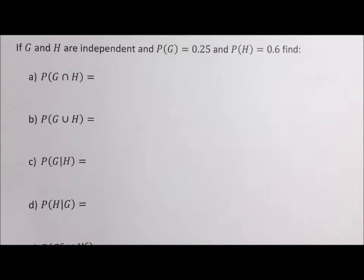Okay, if G and H are independent and the probability of G is 0.25 and the probability of H is 0.6, find the following.